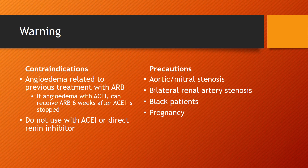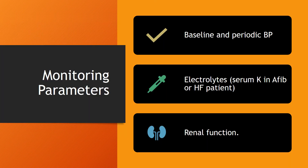Some precautions that need to be paid attention to while giving patients Losartan include patients with aortic mitral stenosis, bilateral renal artery stenosis, Black patients, or patients who are pregnant. Monitoring patients who are on Losartan for efficacy and safety is very important. Some parameters include baseline and periodic blood pressure, renal function, and electrolyte lab values including serum potassium, especially in patients who have atrial fibrillation or heart failure.